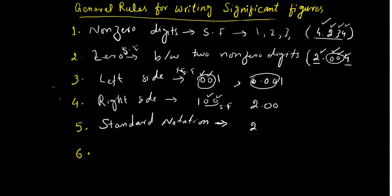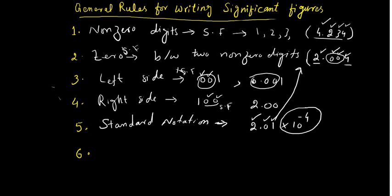For the zero case, we will use scientific notation or standard notation. For example, we will have 2.01 times 10 to the power minus 4. For example, we identify significant figures: 10 powers are not considered. One, two, three — that is 3 significant figures. This is standard notation used to identify significant figures.